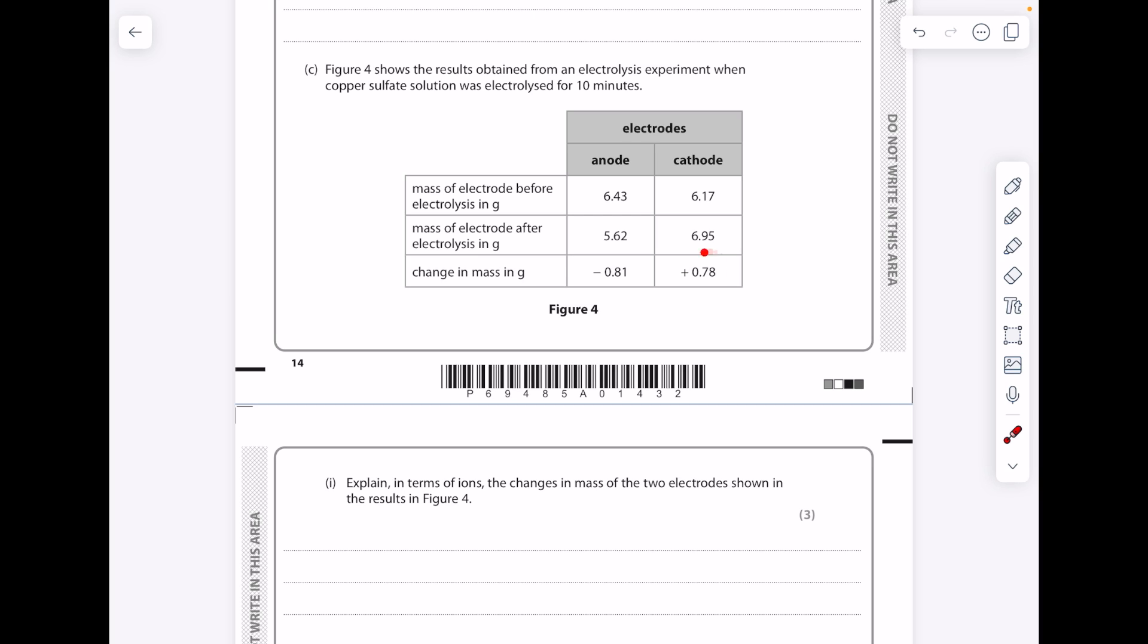And then at the cathode, those copper ions are attracted, they gain electrons, they're reduced. So therefore, the mass increases due to the gain of copper atoms.